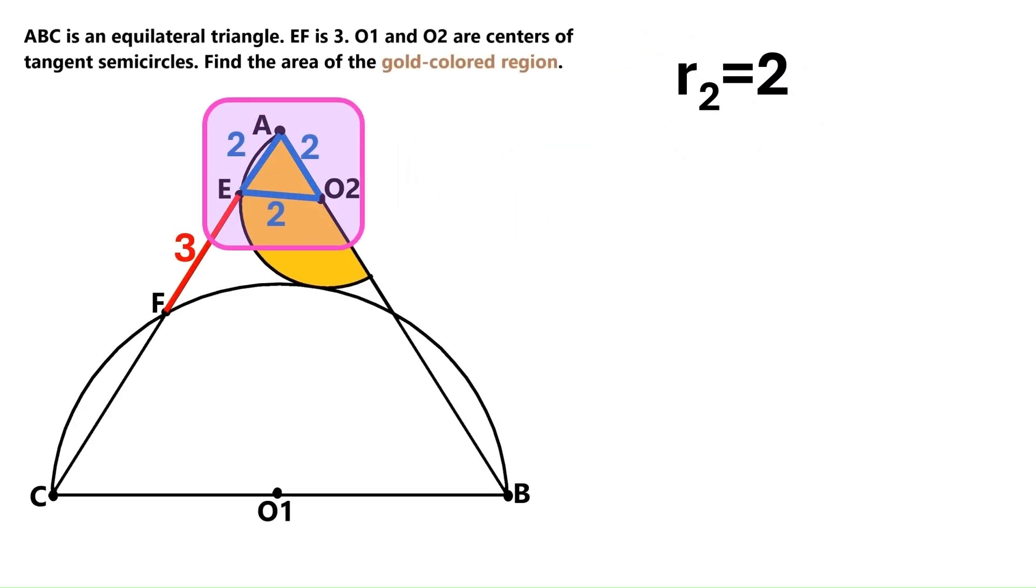We can now replace every R2 with just 2. We are ready to find the gold region's area. The gold region consists of this circular sector over here and this equilateral triangle up here. Let's first find the area of the equilateral triangle. It has a side length of 2. We can use the tangent function we used earlier in this video to calculate that the height is radical 3.